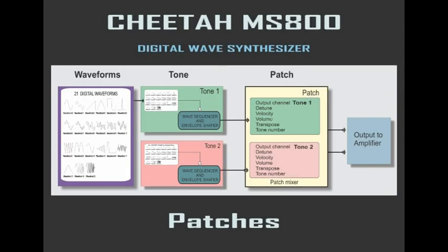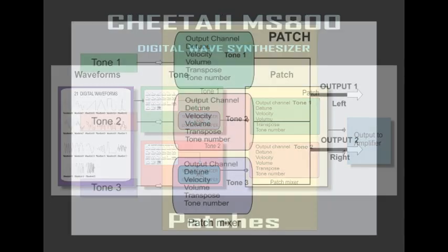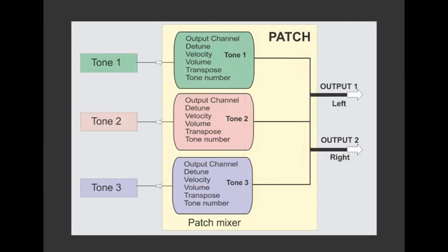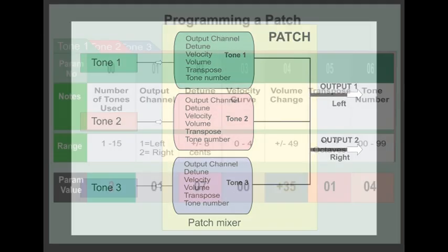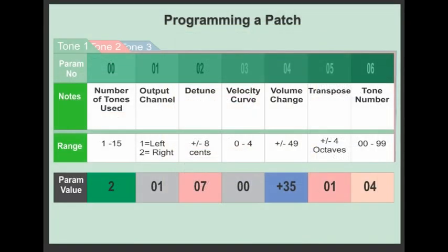So we're now on to patches. We've had a look at the waveforms, we've put a number of them into a tone or a number of tones, and now to be able to hear something, we need to put them into a patch. So a patch can be made up of just one tone or a maximum of 15 tones. And we have a range of parameters to change for each one of those tones within the patch.